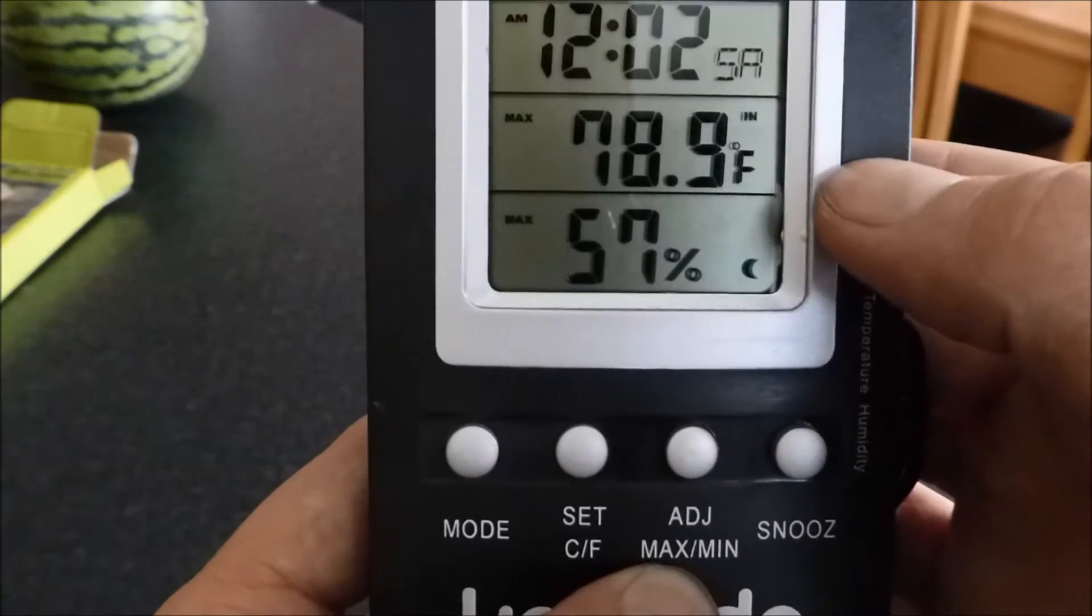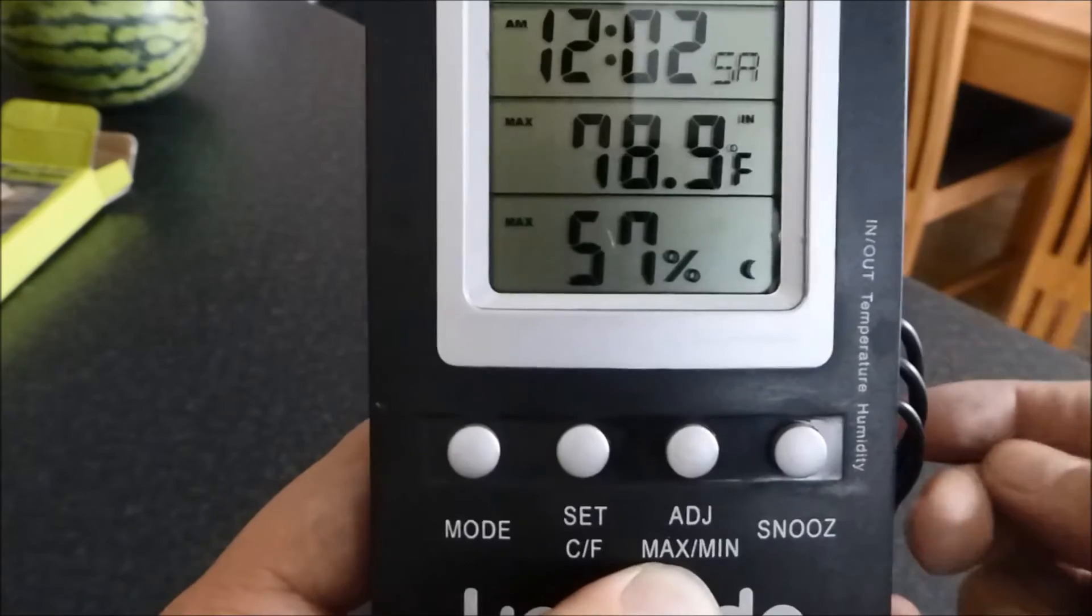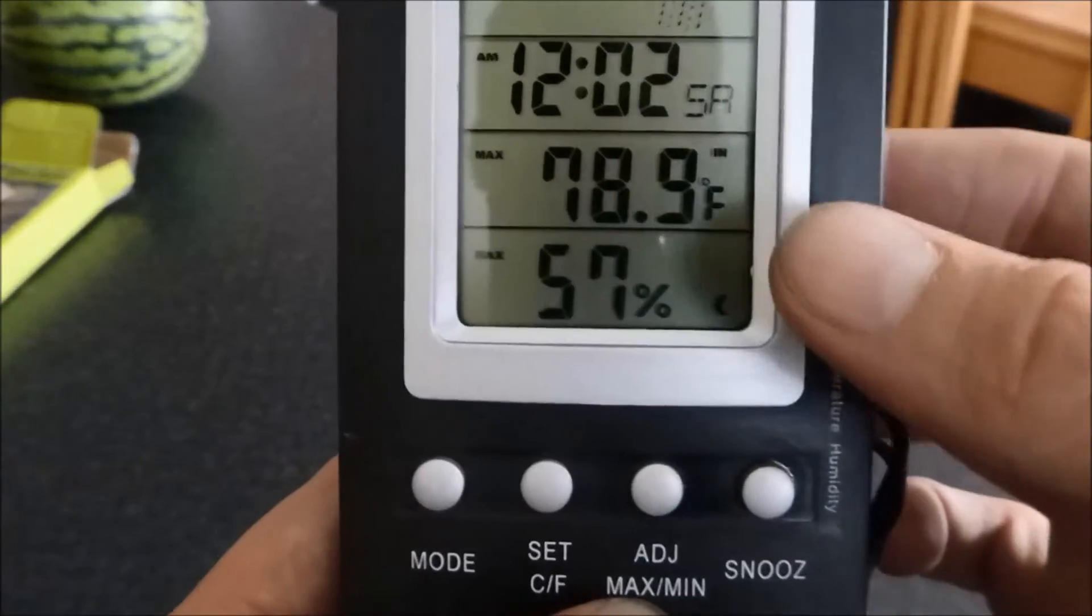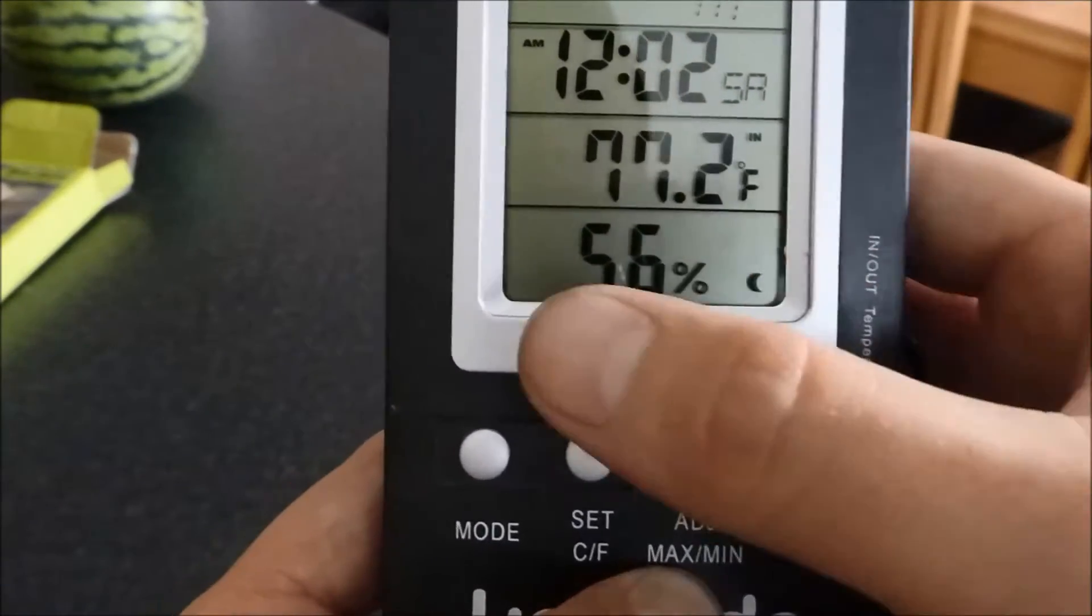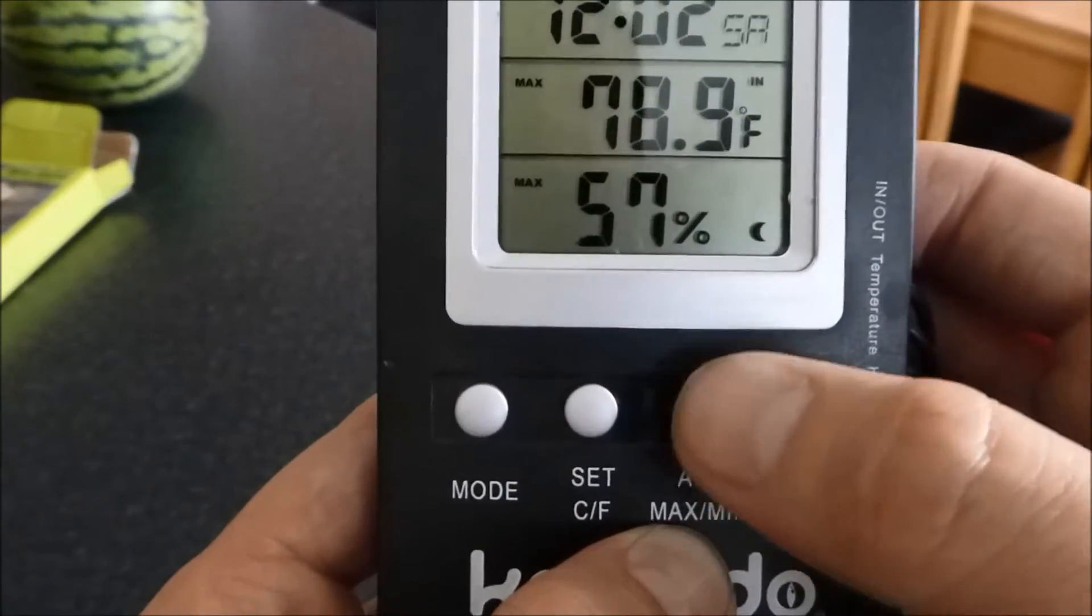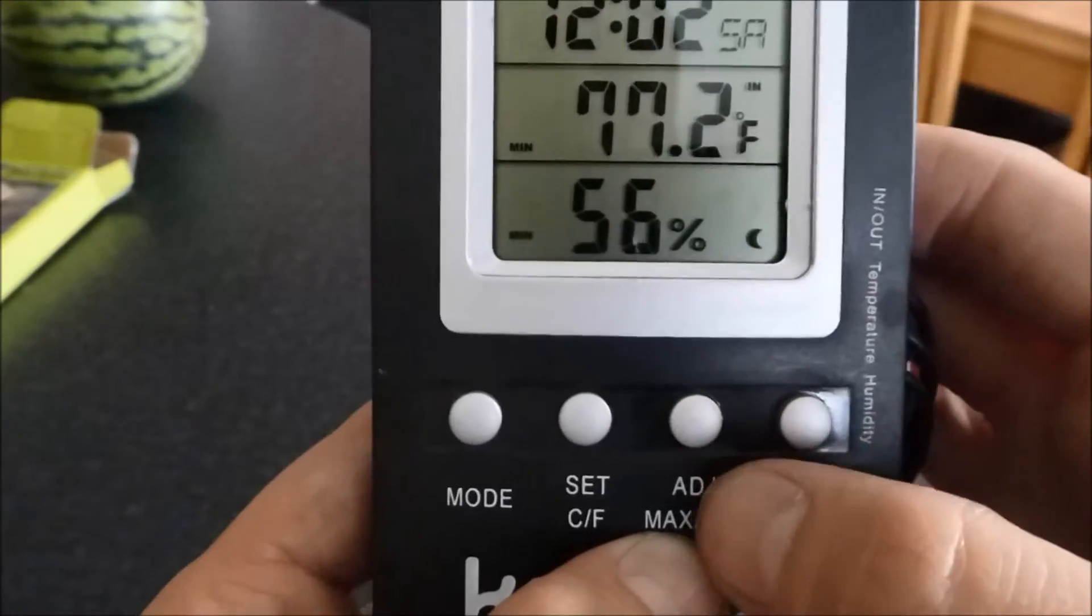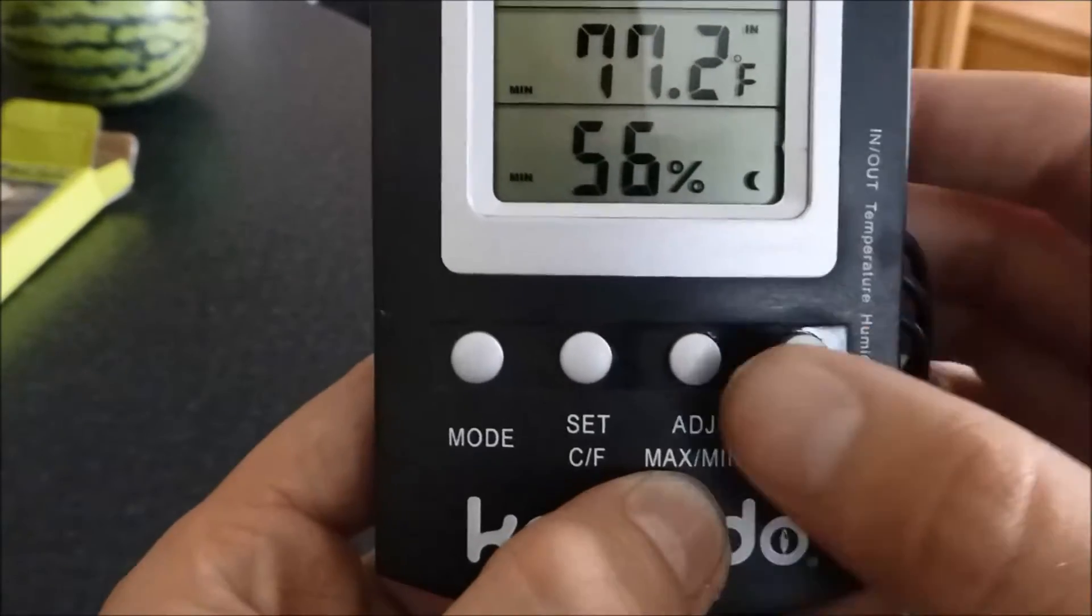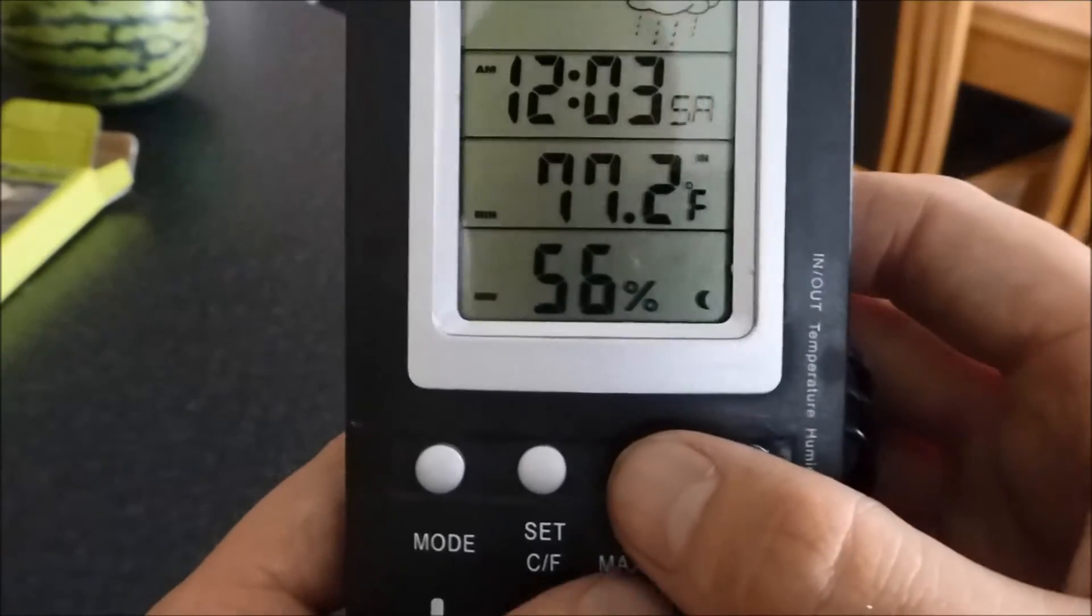So the maximum temperature that has been on this device since I put the battery in at the start of the video is 78.9, and the highest humidity is 57. Press it again, you also get the lowest temperatures. So it's good if you've been at work all day and you need to check the temperatures.